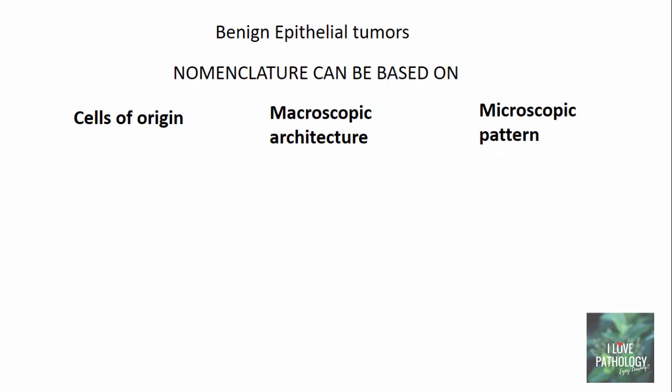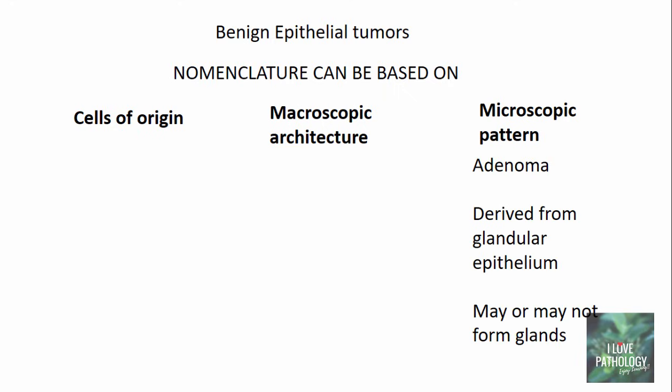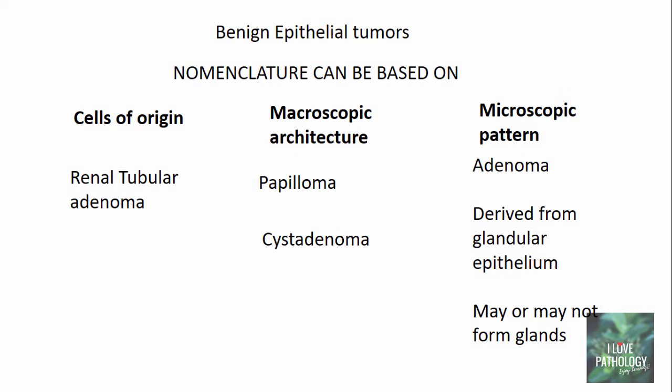Benign epithelial tumor nomenclature can be based on the cells of origin, macroscopic architecture, or microscopic pattern. The most common terminology is adenoma — tumors derived from glandular epithelium that may or may not form glands. For example, renal tubular adenoma means the benign tumor arises from renal tubular epithelial cells. Based on macroscopic appearance, tumors with finger-like projections called papillae are referred to as papillomas, and predominantly cystic tumors are called cystadenomas. A visible projection above a mucosal surface is called a polyp. The nomenclature can be a combination — for example, adenomatous polyp when it is gland-forming and polypoid macroscopically.